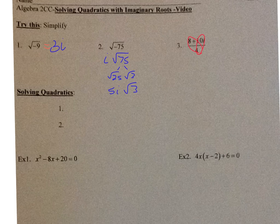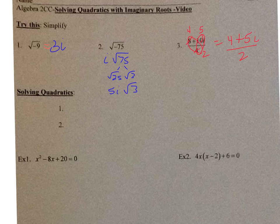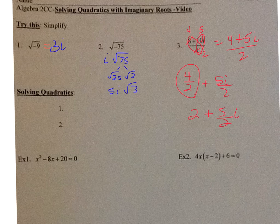Now for dividing — you want to find a common factor. What number goes into 8, 10, and 4? That's 2. Two goes into 8 four times, into 10 five times, and into 4 two times, so we get (4 + 5i) / 2. This can be written as 4/2 + 5i/2, which simplifies to 2 + (5/2)i.